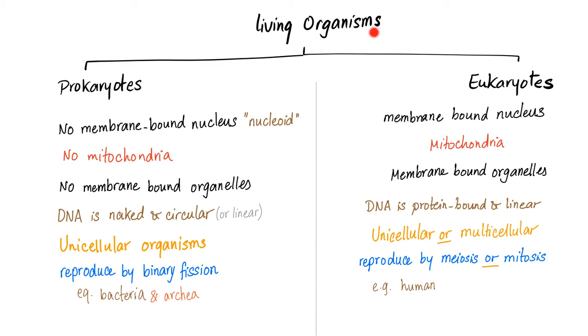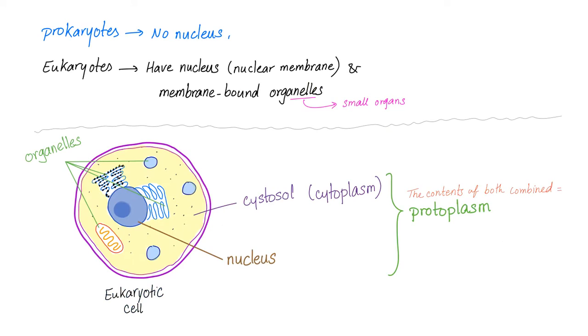I've told you before that living organisms are either prokaryotes or eukaryotes. Today we'll talk about the eukaryotes in detail. In brief: prokaryotes have no nucleus; eukaryotes have a nucleus, which I mean an organelle surrounded by a nuclear membrane, or membrane-bound organelles.